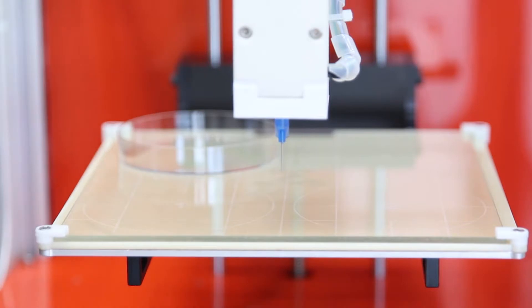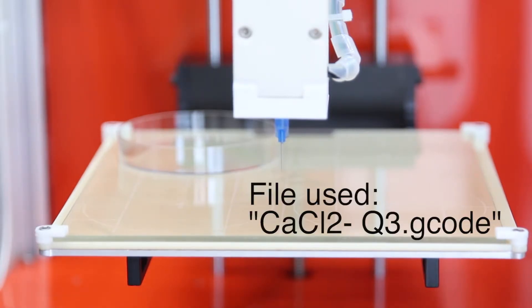Finally, insert your petri dish and print your calcium chloride file.